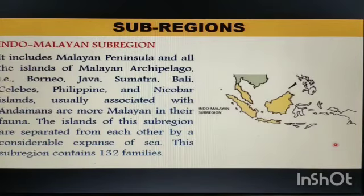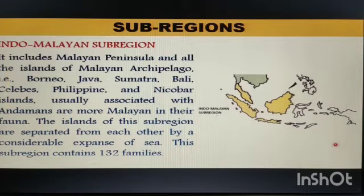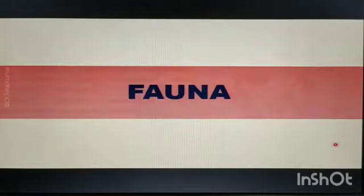The fourth sub-region is the Indomalayan Sub-region. It includes the Malayan Peninsula and all the islands of the Malay Archipelago — Borneo, Java, Sumatra, Bali, Celebes Islands, Philippines, and Nicobar Islands. The islands of this sub-region are separated from each other by a considerable expanse of sea. This sub-region contains 132 families.